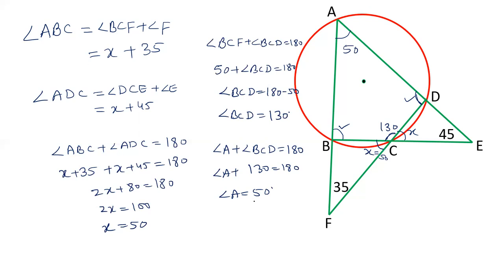Now, ABC is X plus 35. The value of X is 50 plus 35, that is 85.